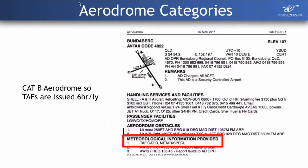To find out what category an aerodrome is, we look at the ERSA — the Enroute Supplement of Australia. There's a section that talks about meteorological information for each airfield. For example, Bundaberg is a Category B aerodrome, so its TAF is issued every six hours.